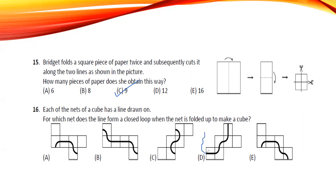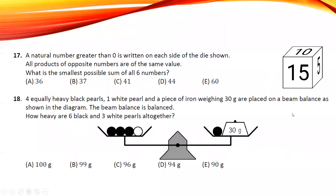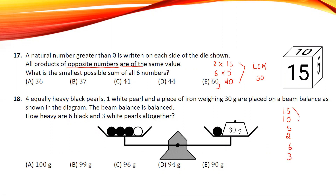By clear observation and drawing the net of the cube, you can see it forms a cube, so D is the answer. For the next question: a natural number greater than zero is written on each side of a die, and all products of opposite numbers are the same value — 15, 5, 10. The LCM is 30, so the opposite pairs are: 15×2, 5×6, 10×3. The smallest possible sum is 15+10+5+2+6+3 = 41... which gives 40.